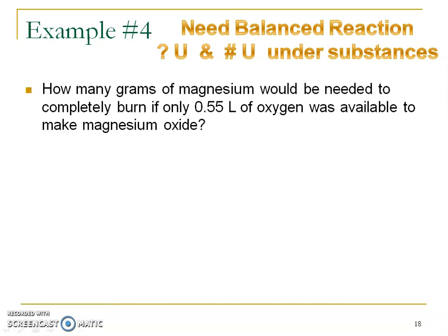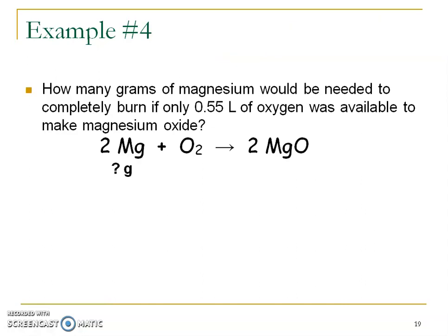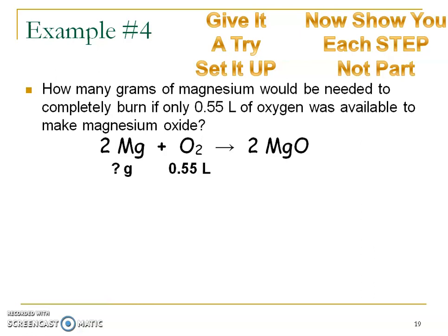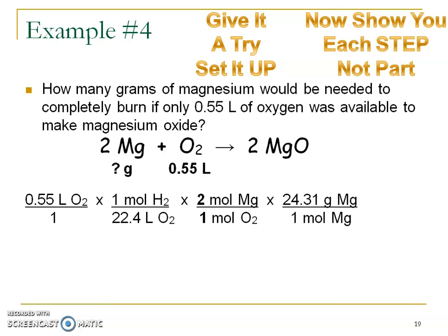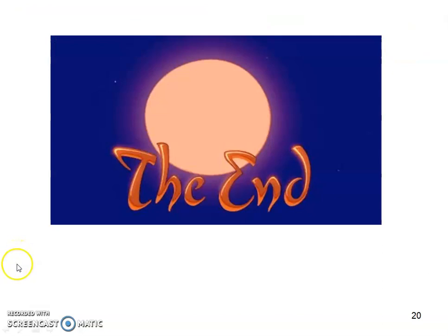Number four — same deal. Pause, come up with a reaction and the question mark and number with units. Hopefully you came up with that, and that, and that. Now pause and give it a try — do the setup on your own. Hopefully you paused and came up with the setup. Here's the first conversion factor, second conversion factor, third, and there's your answer. Hopefully it's starting to make some sense. We'll do some practice problems next.